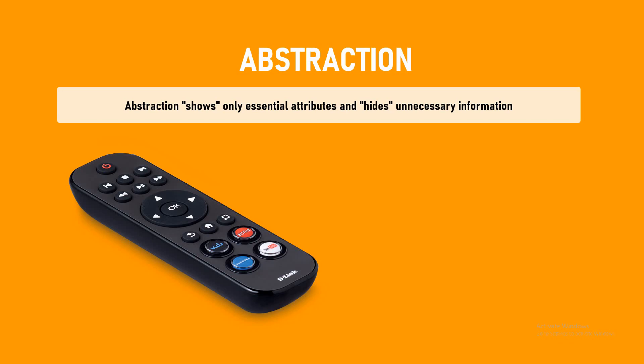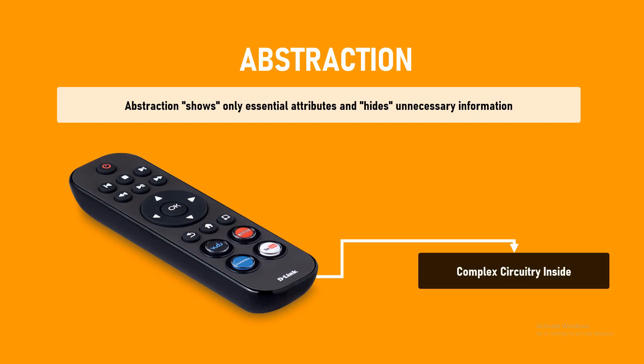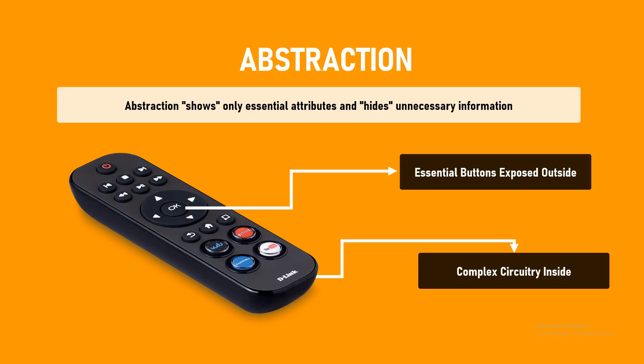You have already seen a remote, right? It contains a lot of complicated electronics inside — a lot of complicated circuitries. But what you're seeing are a few buttons exposed, those usable buttons. Whatever is inside you may or may not be aware of, but the essential buttons are exposed outside of the remote. This is called abstraction.